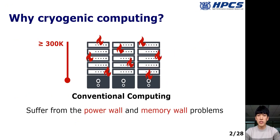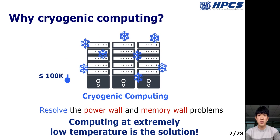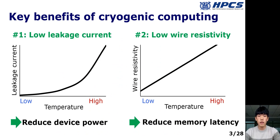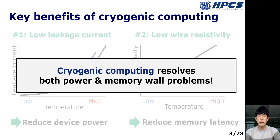As everyone knows, conventional computing now suffers from the power wall and the memory wall problem. To resolve these problems, cryogenic computing has emerged as a highly promising solution. Cryogenic computing means computing at extremely low temperature. There are two benefits: the first is eliminated leakage current, which greatly reduces device power consumption. The second is reduced wire resistivity, which decreases linearly with temperature, allowing us to build much faster memory. By using these benefits, cryogenic computing can resolve both the power and memory wall problems.